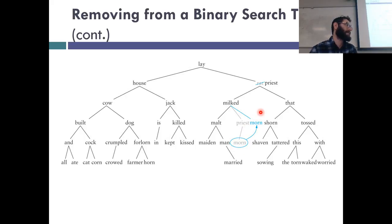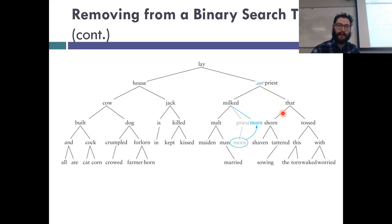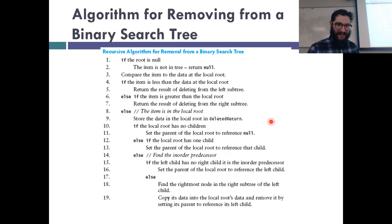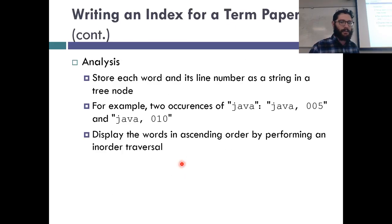Since 'priest' has only one child, this reduces to deleting a node with a single child — an easy case. We simply have 'milk' adopt 'more.' Why did 'priest' get to replace 'rat'? Because we're replacing with the in-order predecessor — the biggest thing in the left subtree, which means one to the left and all the way to the right. If we were doing the in-order successor instead, it would be one to the right and all the way to the left — so we could have replaced 'rat' with 'shaven.'